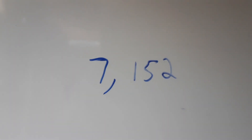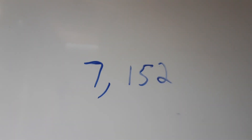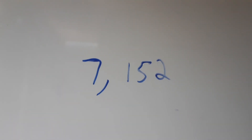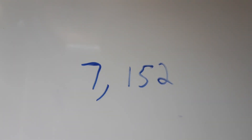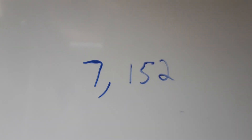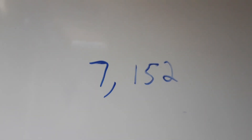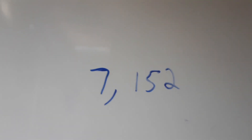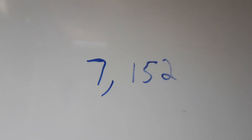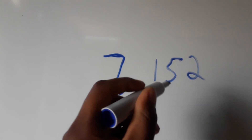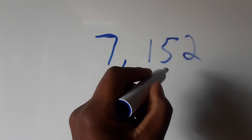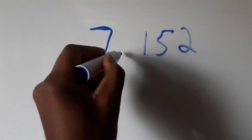Thank you for your continued support. Today we'll be learning about how to round off to one decimal place. When rounding off to one decimal place, we'll be looking at the second number after the decimal point.